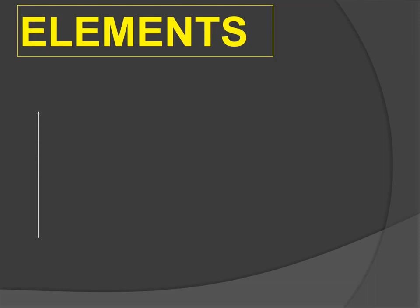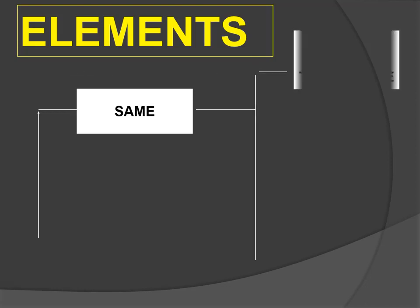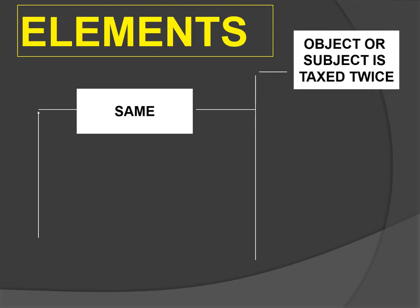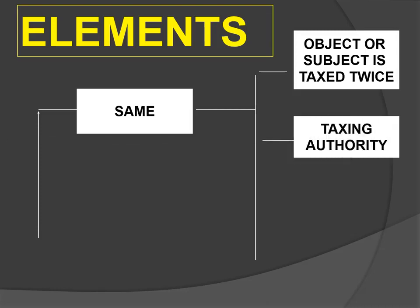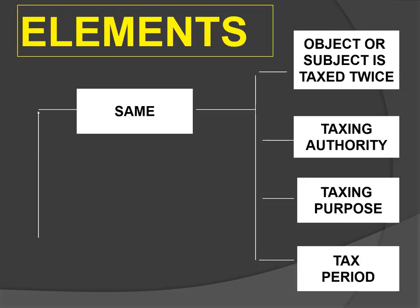I'll teach you now a method of analyzing a problem — whether it is direct duplicate taxation or indirect duplicate taxation. You must always look at the elements of the concept you're studying. For double taxation, you have the element of sameness: the same subject or object is taxed twice, by the same taxing authority, for the same taxing purpose, and during the same taxing period. But remember, this is only one of the elements of direct duplicate taxation.